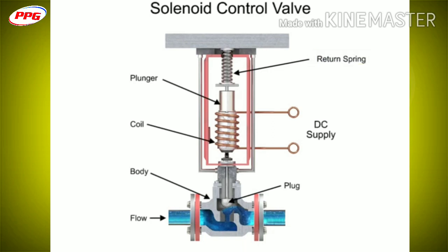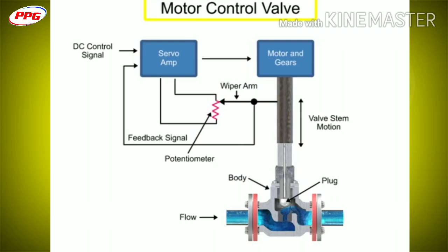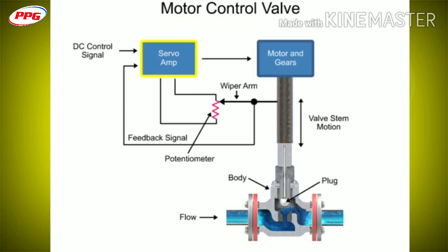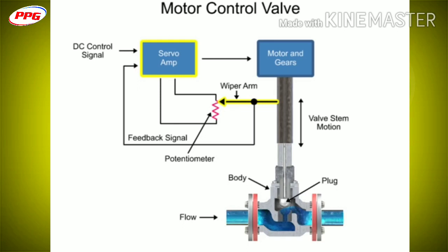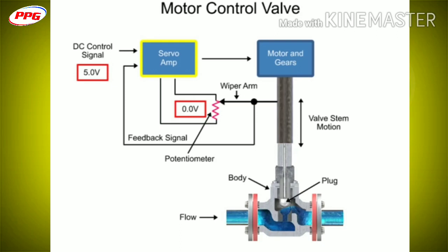Another method for variable valve positioning uses a motor and is referred to as proportional control mode. Using a gear motor attached to the valve stem, a servo amplifier provides a DC control signal that moves the valve to the desired position. Feedback is achieved with a wiper arm attached to the valve stem that sends a signal back to the servo amplifier where the position is monitored. The servo amplifier drives the motor until the control signal is equal to the feedback signal.